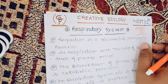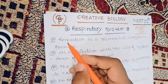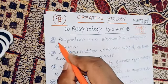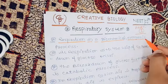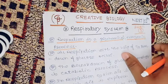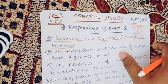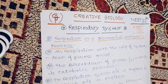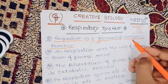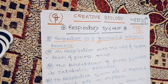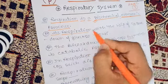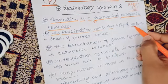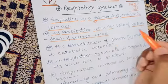Now I'm going to start the chapter on the respiratory system. First of all, you should know what is respiration. Respiration is a biochemical exergonic process. It is biochemical because different enzymes and chemicals are involved in respiration. It is an exergonic process because after respiration, energy is released.